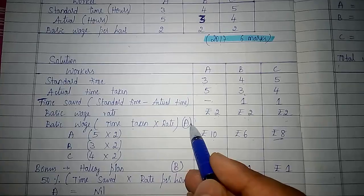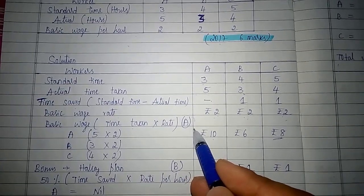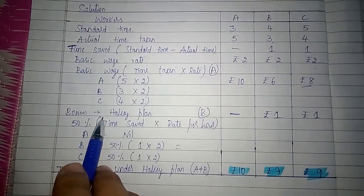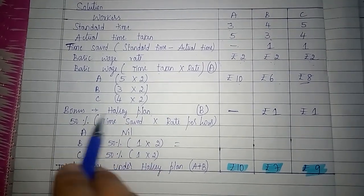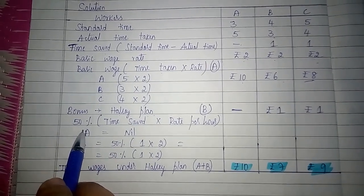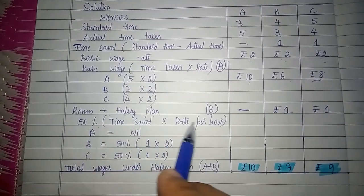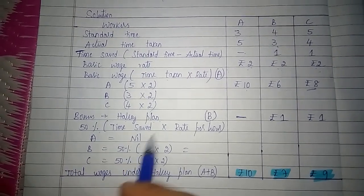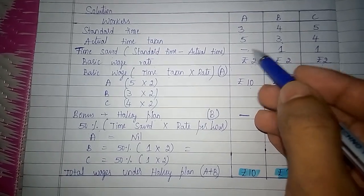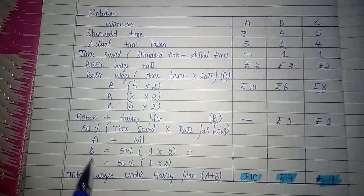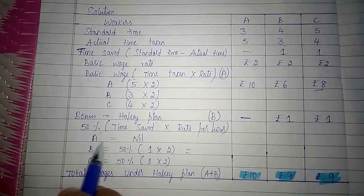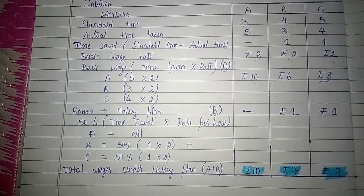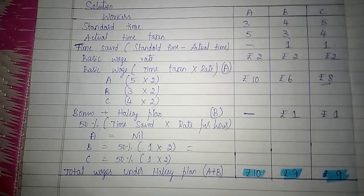Let us denote this basic wage as A for the purpose of calculating total earnings under the Halsey system. Under Halsey plan, bonus can be calculated using the formula: 50 percent of time saved into rate per hour. Here A has not saved any time because he has taken more than the standard time, so he won't get any bonus — nil. The employee is entitled to get a bonus only if he has completed his work within the standard time.